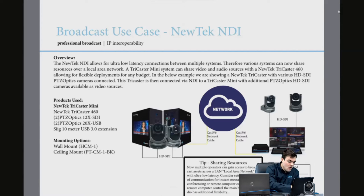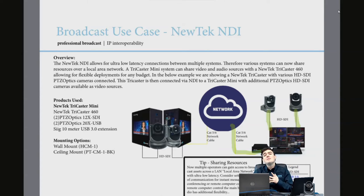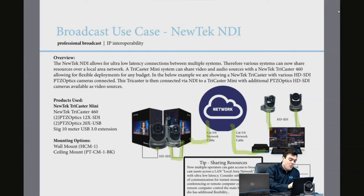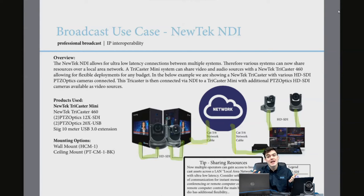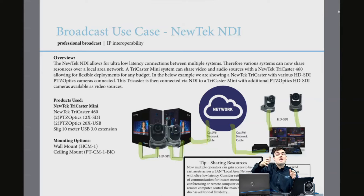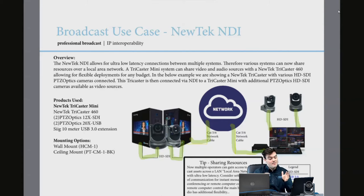Here's a broadcast use case scenario: say you've got a TriCaster 460 with multiple cameras on the network for live streaming, and you've also got one or two smaller systems like a TriCaster mini with two HD SDI cameras also on the network. What can happen now is we can share these sources over the network with ultra low latency NDI. So technically the TriCaster 460 has four cameras and the TriCaster mini has its own — you can now share resources across your network with ultra low latency, which is plan to be announced at NAB.